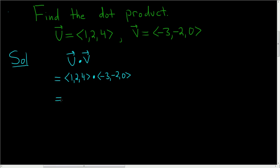So to find the dot product of two vectors, you just multiply the corresponding coordinates and add.